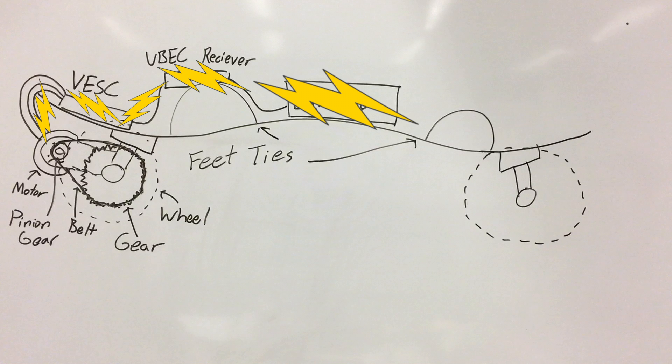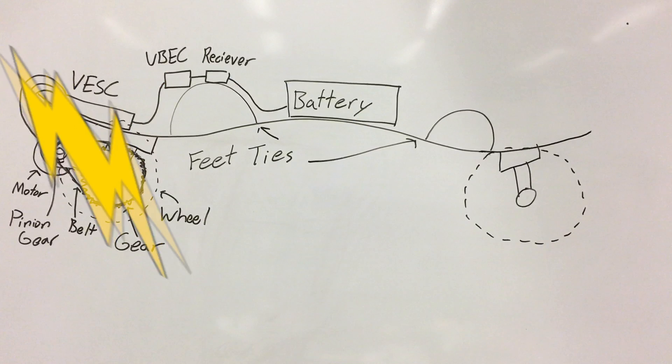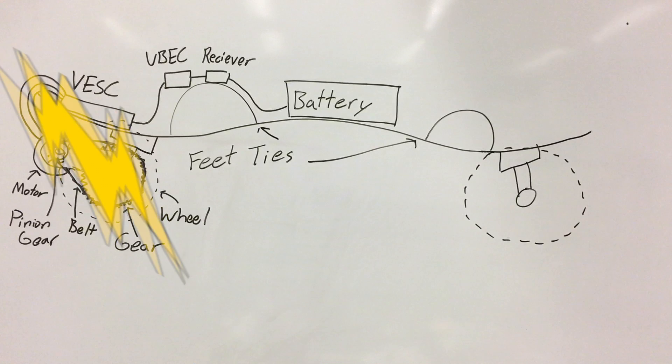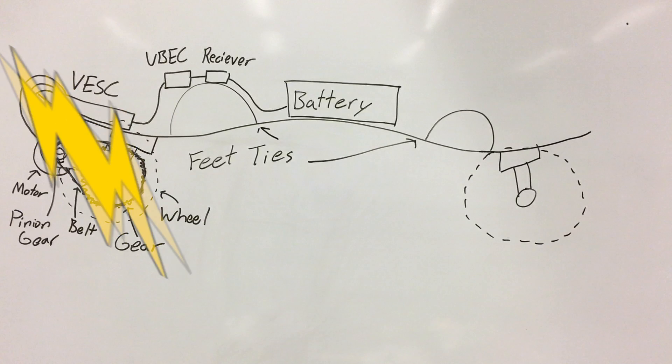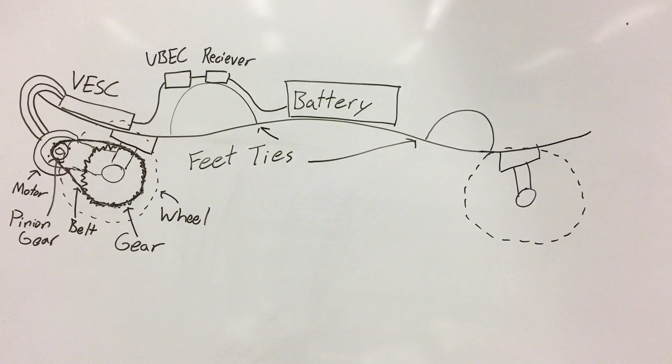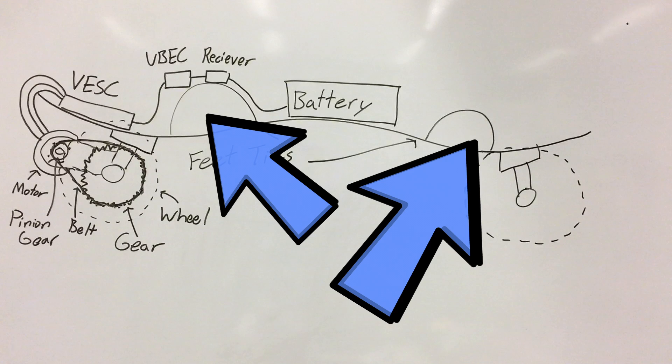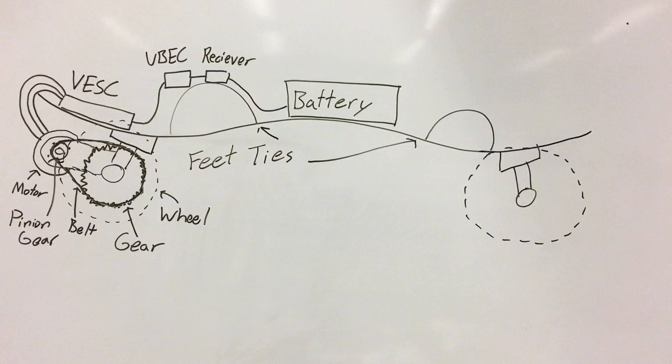provides power to the entire skateboard, not only powering the motor but also the internal components of the VESC, the receiver, and all these electronics on the board so that it can have the power to move you. And the two weird bumps on the board are the feet ties, so that's where you slide your feet in so that you can have a secure stance on this board.